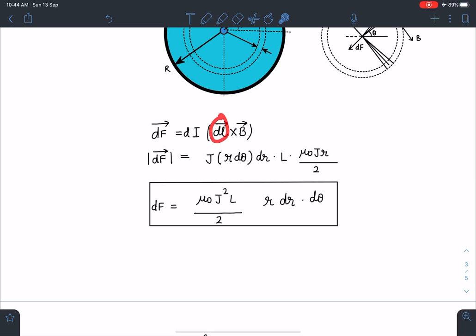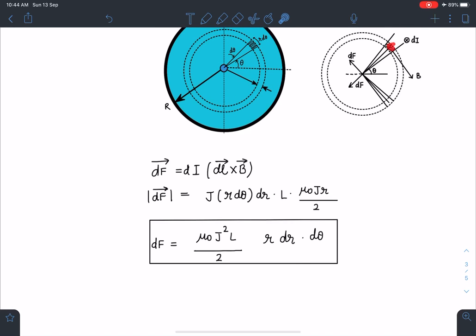This dl is the length of wire I'm assuming as L, and B is μ₀jr/2. Angle between them is 90 degrees, so this is the magnitude of this dF I am going to get here. You can read it as μ₀j²L/2 times r dr dθ.